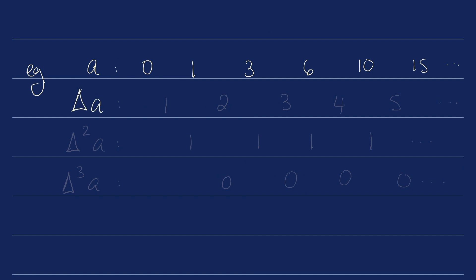We're going to write down this second sequence, delta of a, and I'm going to stagger this a little bit to be clear which differences we're taking. The first term of delta a is going to be 1 minus 0, which is 1. The second term is 3 minus 1, which is 2, then we'll have 3, 4, 5, etc.